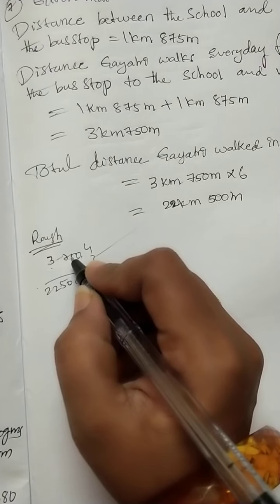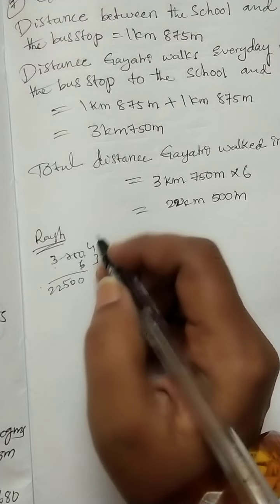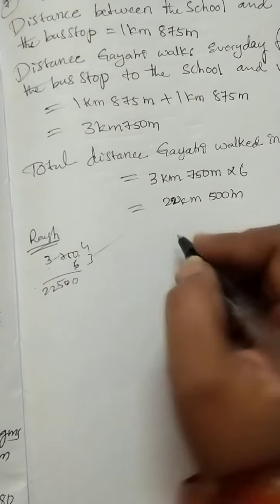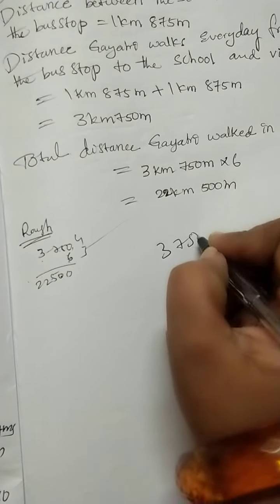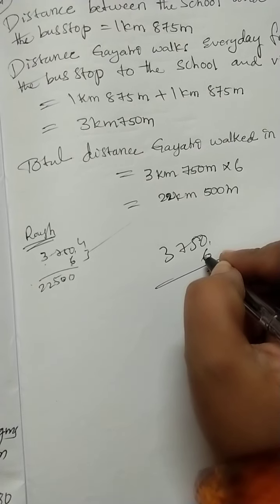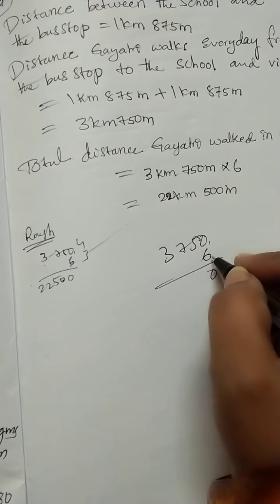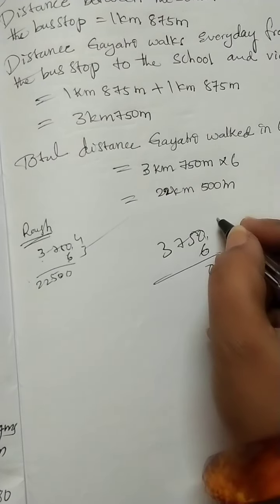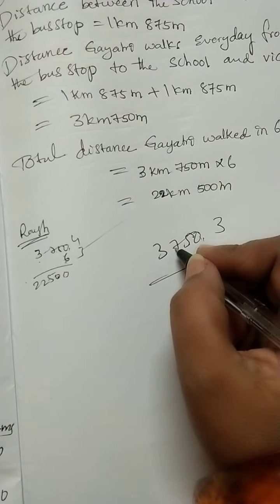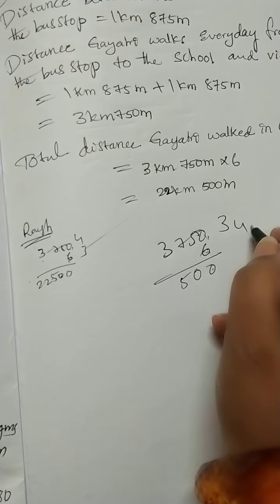6 times 5 is 30. 6 times 7 is 42, carry 4. 6 times 3 is 18 plus 4 equals 22.